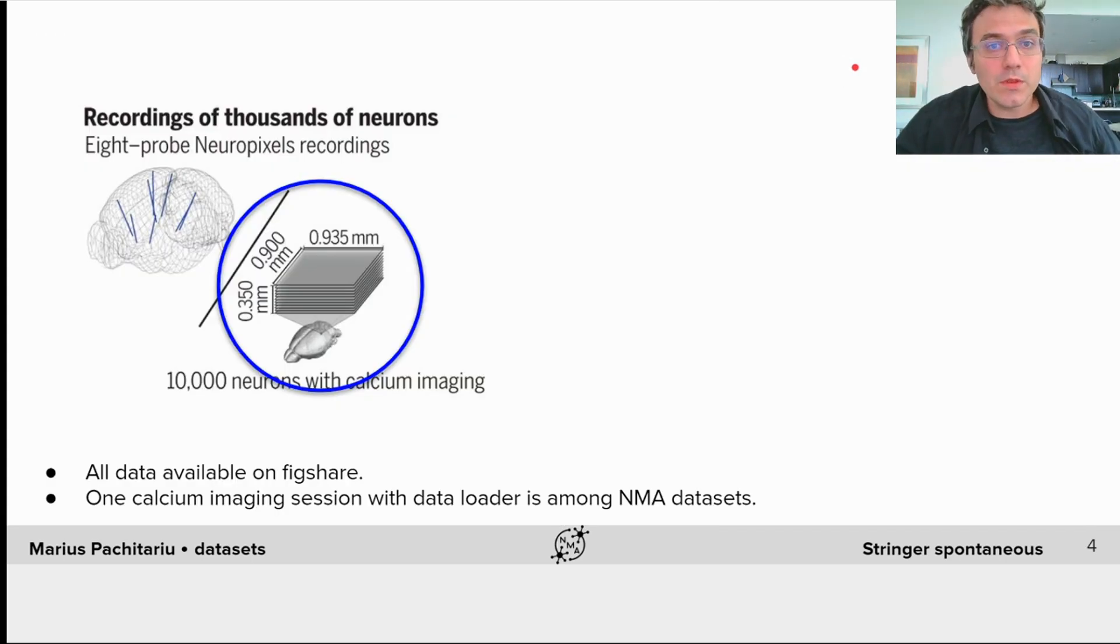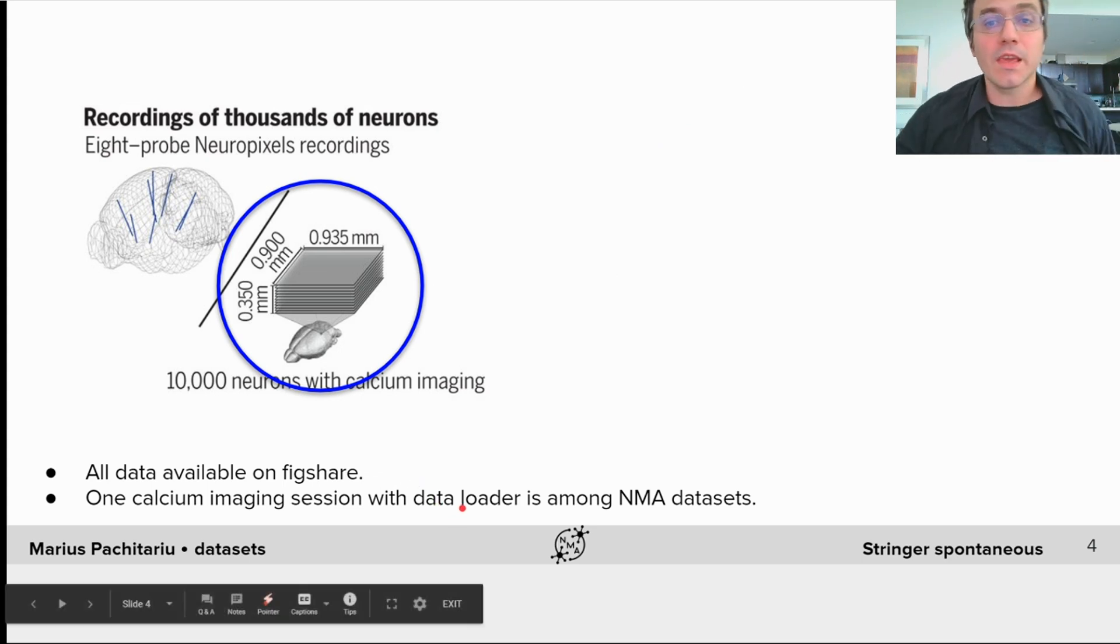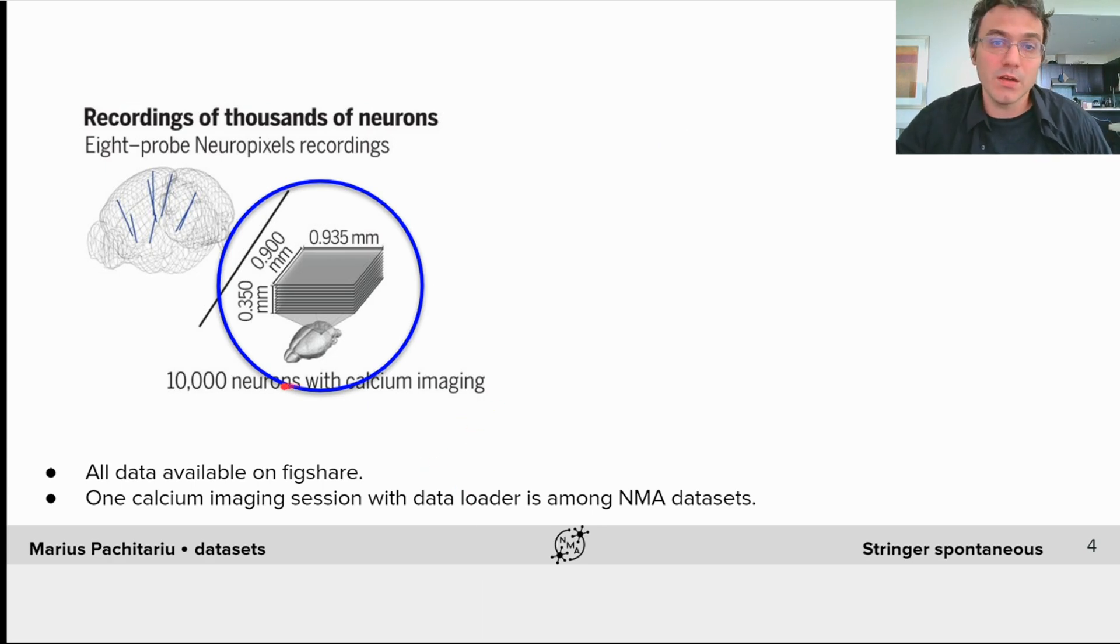In the paper, we do several analyses on this data, as well as on Neuropixels data, and you can find all datasets online on Figshare. For the project, we will only consider one of the calcium imaging datasets, which has been binned temporally at approximately 1 Hz.